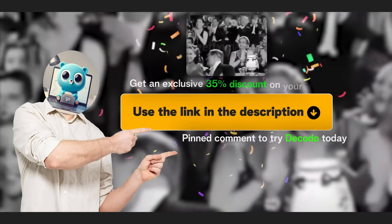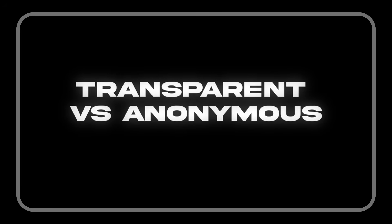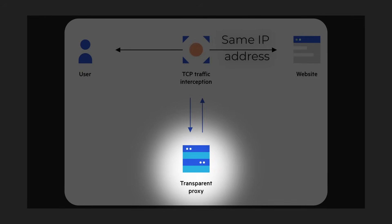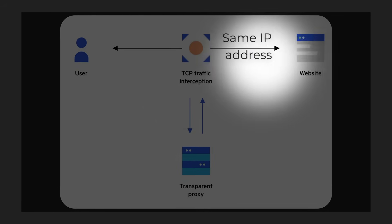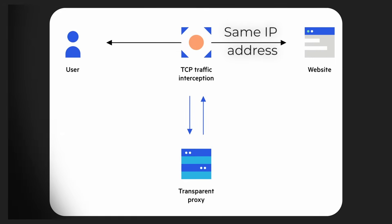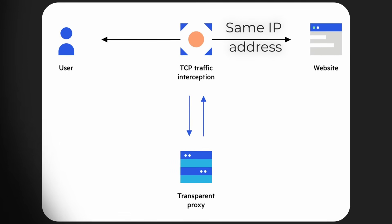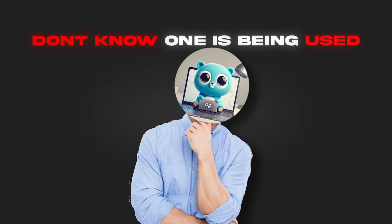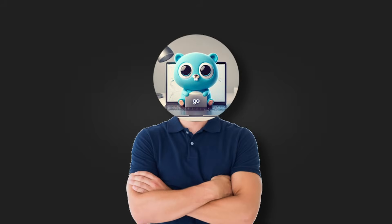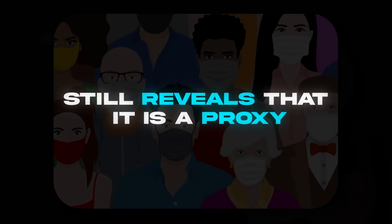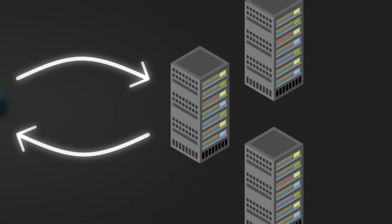How about transparent versus anonymous versus elite proxies? A transparent proxy doesn't hide the fact that it's a proxy and passes along the original client IP address. These are often used for passive monitoring, access control, or caching in schools and offices — users usually don't know that one is being used. An anonymous proxy does mask your original IP address but still reveals that it is a proxy. The server knows the request is coming through a proxy, but not who sent it.